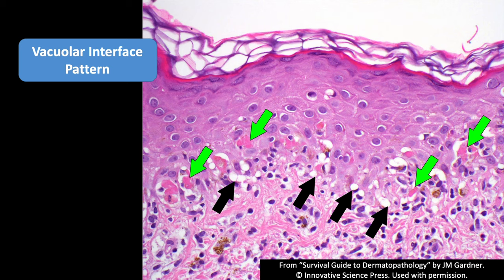Lymphocytes come up and attack the basal keratinocytes, and in the process some of the keratinocytes die, which gives you these little pink blobs of dead keratin. These are called apoptotic or necrotic keratinocytes — though they're probably really apoptosis. Some people also call them cytoid bodies, savat bodies, or diskeratotic keratinocytes, depending on the clinical disease.